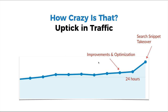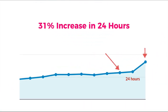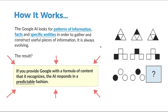Here's a case study I did inside Traffic Research, where I show people how to rank for search snippets step by step. I made the improvements and optimizations, and in less than 24 hours we got that search snippet. We got a ranking boost, and it actually resulted in a 31% increase in traffic in 24 hours just from applying these methods. So this is what we're going over today — I'm going to be teaching you so you could start replicating all of this.